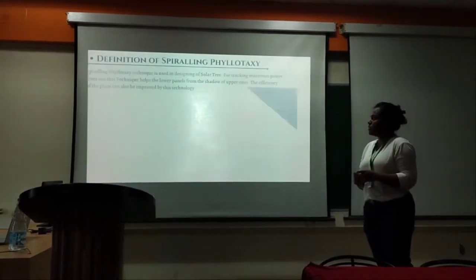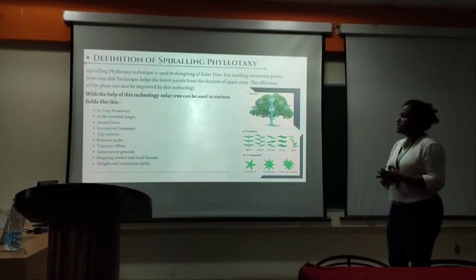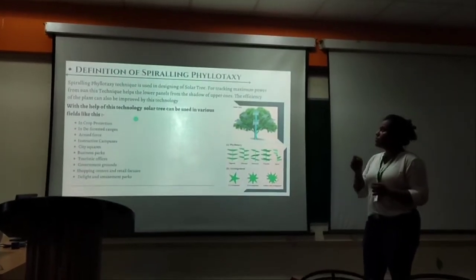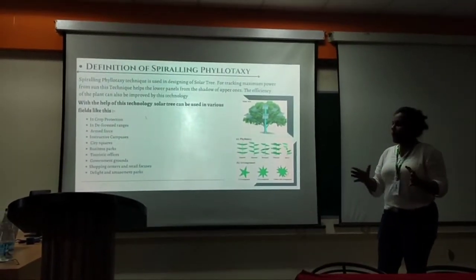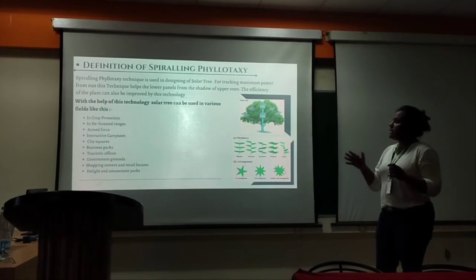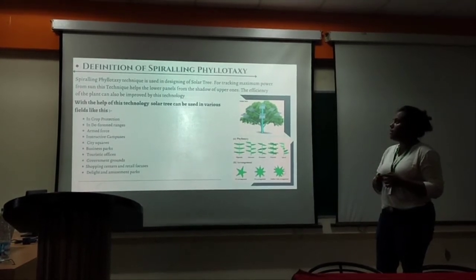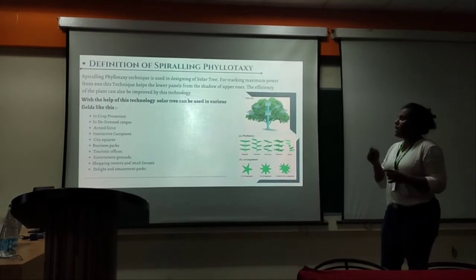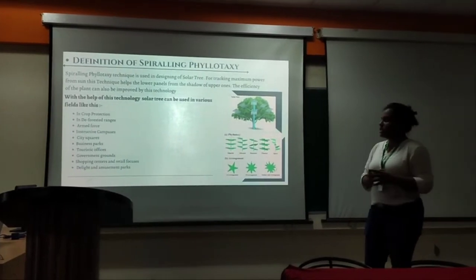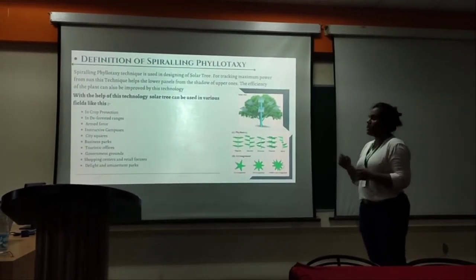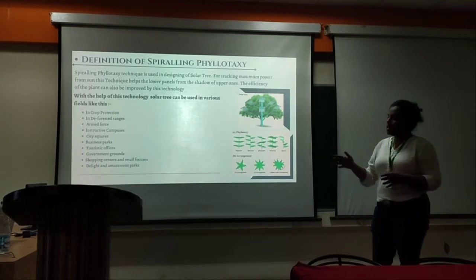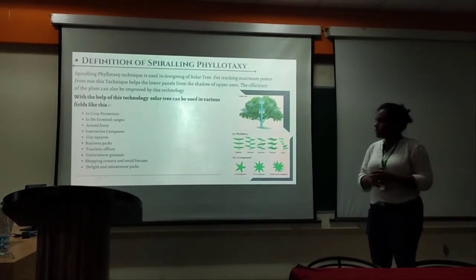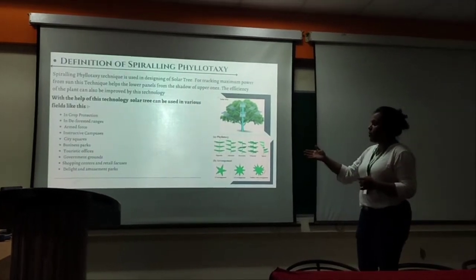So what is spiraling phyllotaxis? Spiraling phyllotaxis is used in the designing of solar trees. For tracking maximum power from the sun, this technique helps the lower panels avoid the shadow of upper panels. The efficiency of the plant can also be improved by this technology. This technology helps in various fields like armed forces, instructive campuses, city squares, business parks, community structures, delight and amusement parks, shopping centers, retail courts, and corporations.